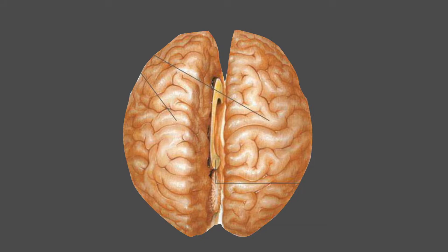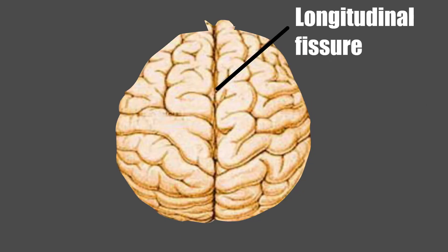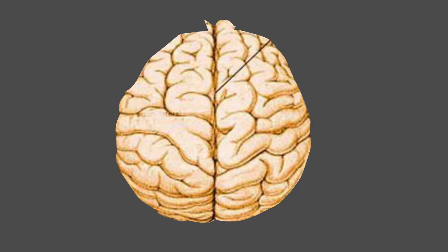The cerebrum is the largest part of the brain and consists of two cerebral hemispheres, connected by a white matter mass called the corpus callosum. The hemispheres are separated by a deep cleft called the longitudinal fissure.